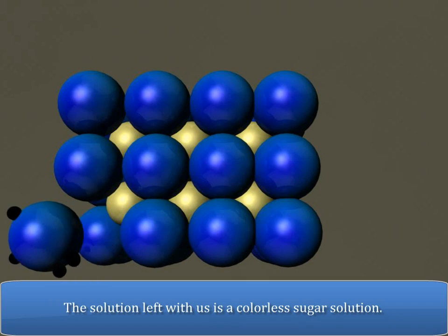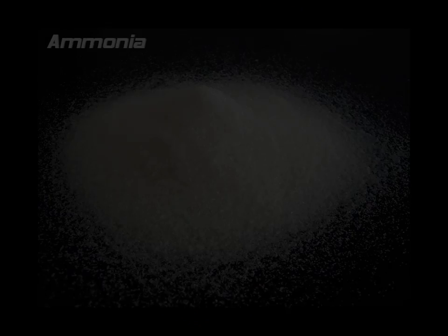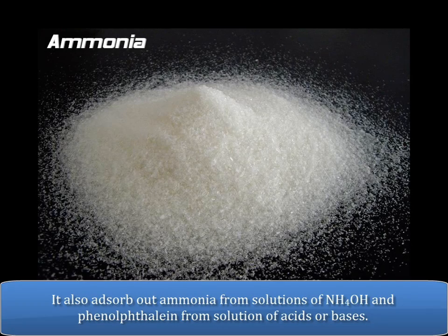The solution left with us is a colorless sugar solution. Other examples of the absorption of solutes by activated charcoal include absorbing out certain acids like acetic acid and oxalic acid present in water. It also absorbs out ammonia from solutions of NH4OH and phenolphthalein from solution of acids or bases.